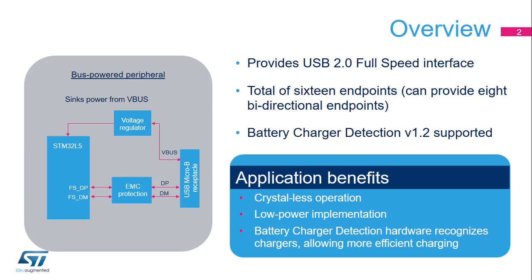The simplest implementation is a USB peripheral device. It provides a 16-endpoint capability, which can be configured, for example, as 8 bidirectional endpoints. It also supports the Battery Charging Detection specification version 1.2. Application benefits include Crystalless Operation, a low-power implementation, and faster charging, thanks to the Charger Detection function.